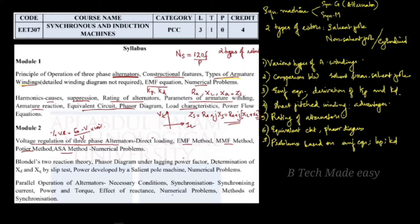The EMF method is the same as the synchronous impedance method. If we use the EMF method, we can determine the value of voltage regulation. This method is also known as the synchronous impedance method.